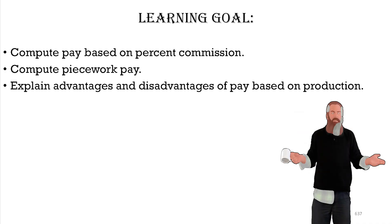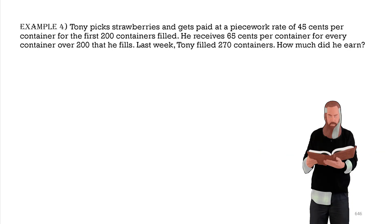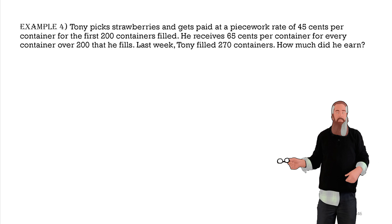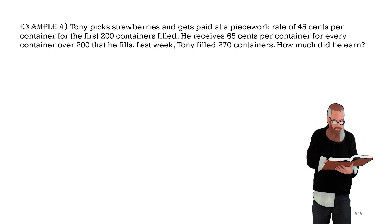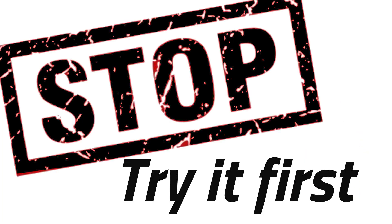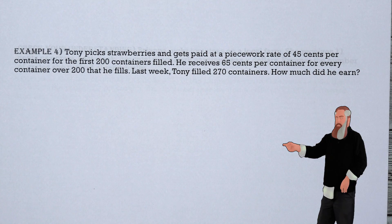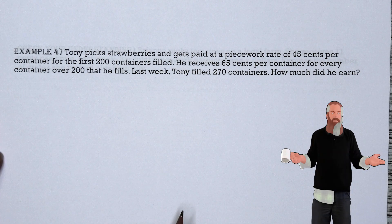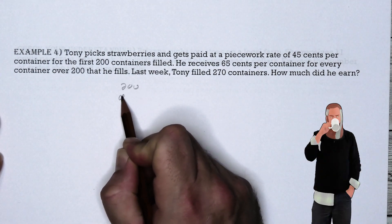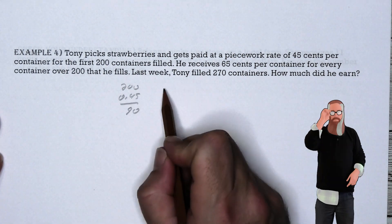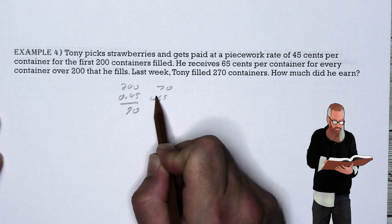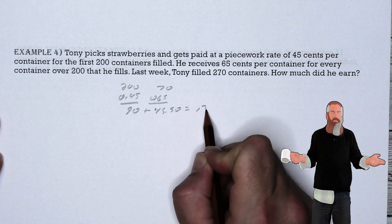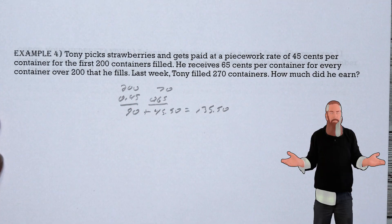Tony picks strawberries and gets a piecework rate of $0.45 per container for the first 200 containers, and $0.65 per container for every container over 200. Last week Tony filled 270 containers. First 200 containers: 200 × $0.45 = $90. The additional 70 containers: 70 × $0.65 = $45.50. Total: $90 + $45.50 = $135.50 earned last week.